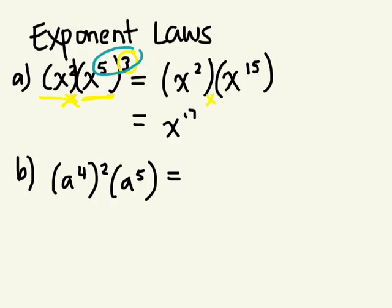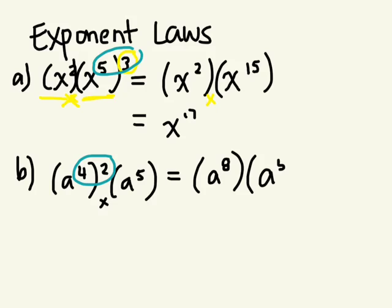Next example: we have a to the power of 4 to the power of 2, multiplied by a to the power of 5. What is a to the power of 4 to the power of 2? That's a to the power of 8. We simplify the power of a power first, and then that's multiplied by a to the power of 5.